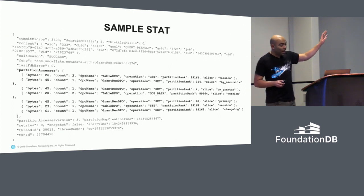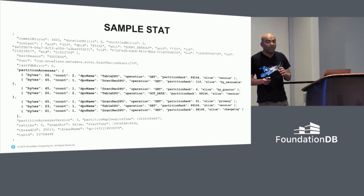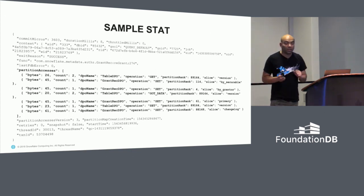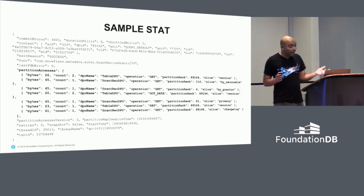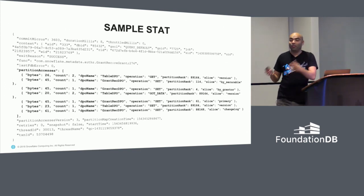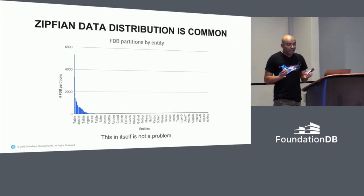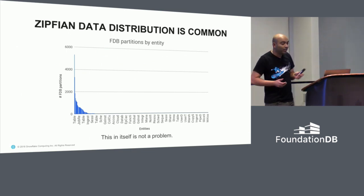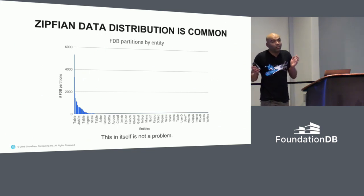All I really want to show is that we have partition rank — we call it partition rank, but it's really a shard in FDB terms. We can see how many bytes came from each partition. We push this information back into Snowflake because we can query it easily, though you can push it anywhere you want. I've heard the FDB team has considered pushing it back into FDB itself and running queries on top of it.